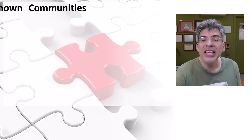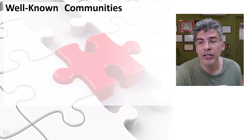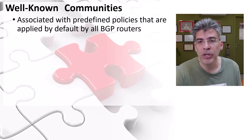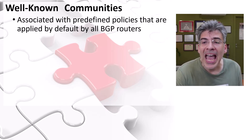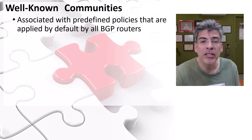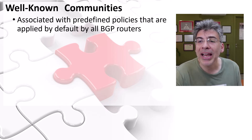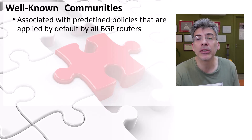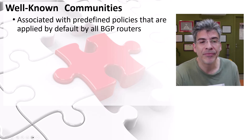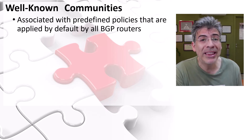Other than the types of communities as far as the format of community values goes, there are also what are known as well-known communities. These communities have predefined policies that are applied by default by all BGP routers. Whenever these communities are encountered attached to a particular route, those routes are handled in very specific ways.